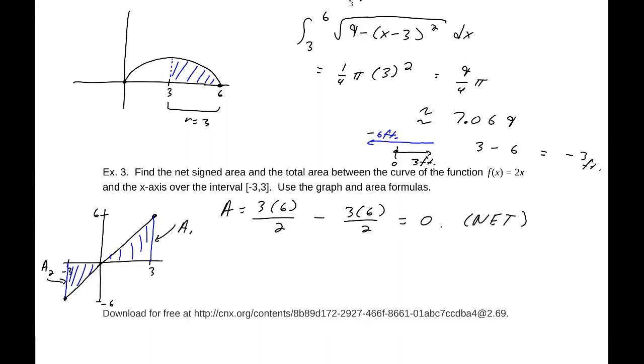So my total area is the next thing. The total area, that is going to be 3 times 6 over 2 plus 3 times 6 over 2, which will be 18. So my total area is 18, but my net is 0 because those two actually have the same area.